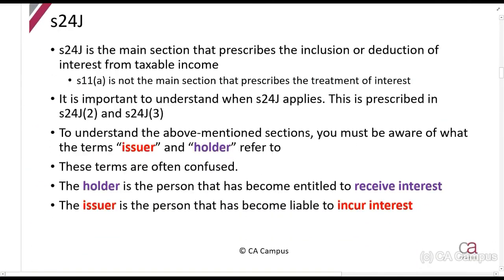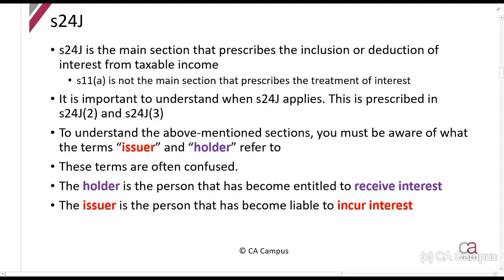Section 24J is the main section that tells us what to do with interest. So far, when we've calculated certain things in our questions, we basically just assumed we use the general deduction formula to deduct interest expenditure. If a question tells you a company has incurred 5,000 rands of interest for the year, we usually just deduct it under Section 11(a). But what we're going to see here is that Section 24J is probably going to be applicable, especially for situations where there is a yield to maturity — and a yield to maturity is the I that you calculate on your financial calculator.